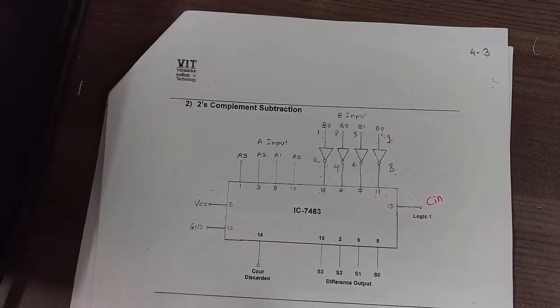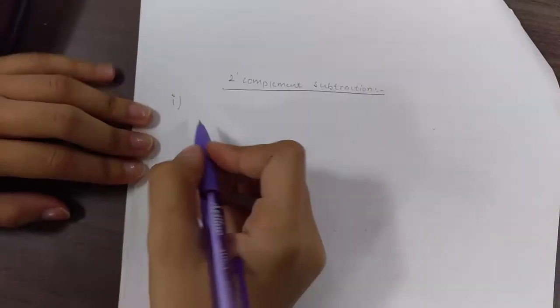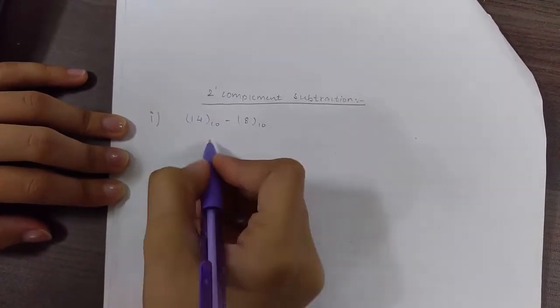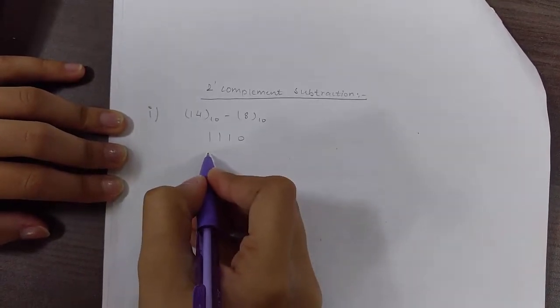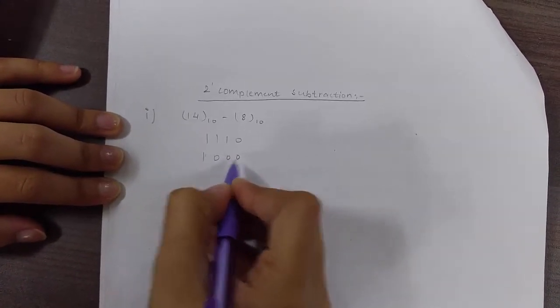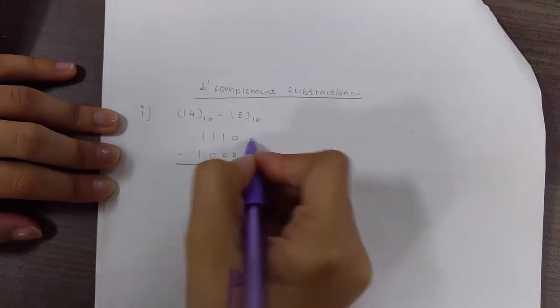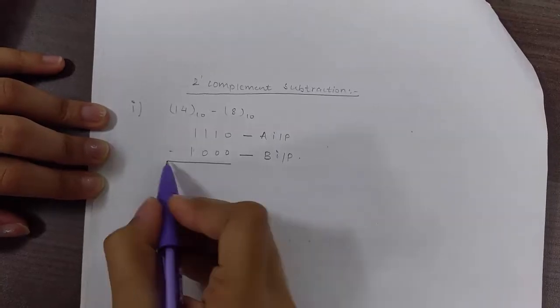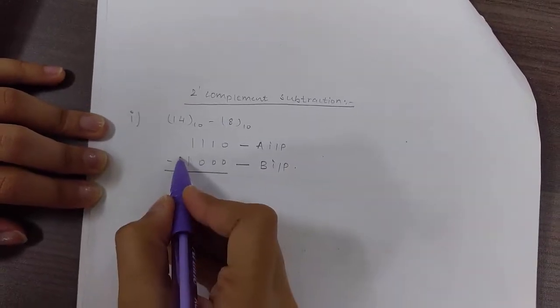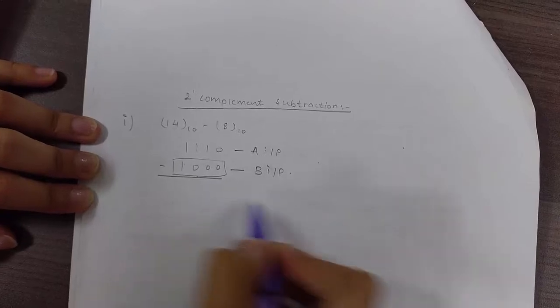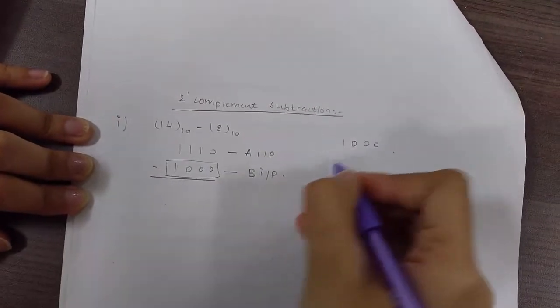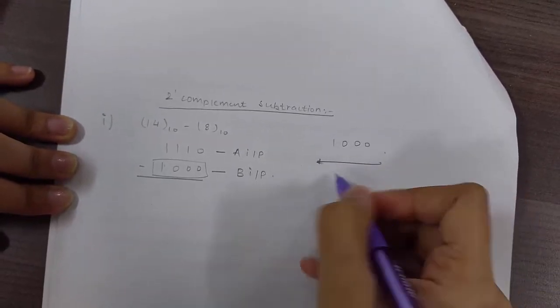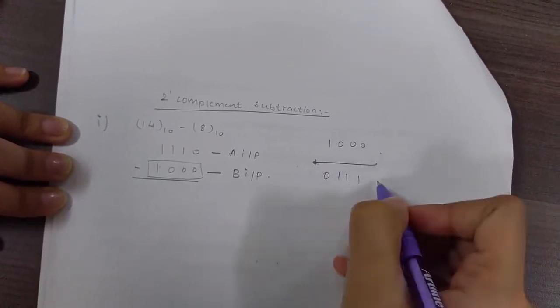Now let's check the truth table for that. Let's take one example for this: 14 minus 8. 14 in binary is 1110 and 8 in binary is 1000. We need to subtract this. This is our A input and this is our B input. In performing 2's complement we take this number and take its 2's complement. So 1000, 2's complement is basically complementing this, 1's complement, and then adding 1 to it.